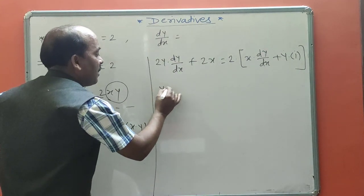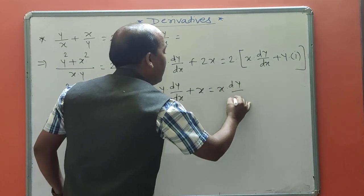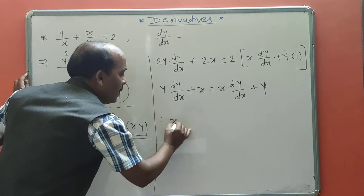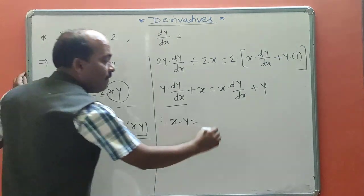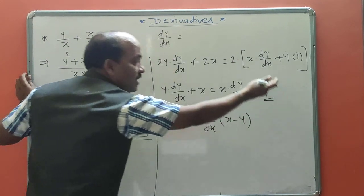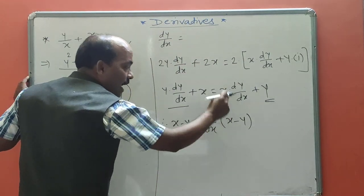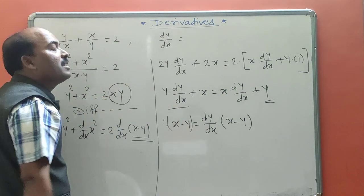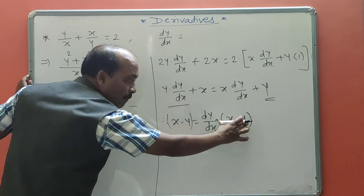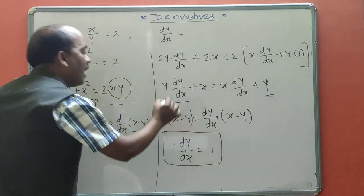Rearranging: separate dy/dx terms and other terms. dy/dx terms: y·(dy/dx) minus x·(dy/dx). Other terms: x minus y goes to RHS. Take dy/dx as common, leaving bracket (y minus x). RHS is (x minus y). Both sides have (x minus y) — note (y minus x) = minus(x minus y). Dividing both sides by (x minus y), they cancel out. Therefore, dy/dx = 1.